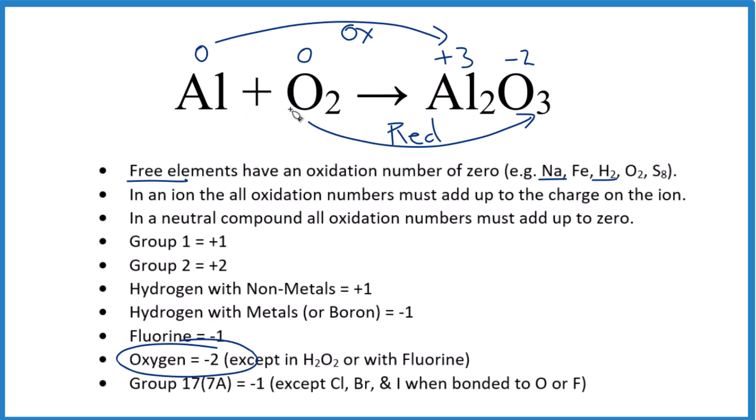So in answer to our question, Al plus O2 yields Al2O3. It is a redox reaction. Electrons are transferred between the aluminum and the oxygen to produce this aluminum oxide.